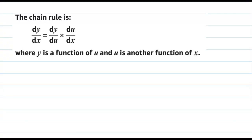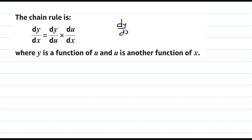Hi there. Today we are going to learn about the chain rule. The chain rule is denoted by dy over dx, and it is dy over du times du over dx, where y is a function of u and u is another function of x. If it is in terms of t, you can write dy over dx as dy over dt times dt over dx. If you cancel dt with dt, you get dy by dx again.